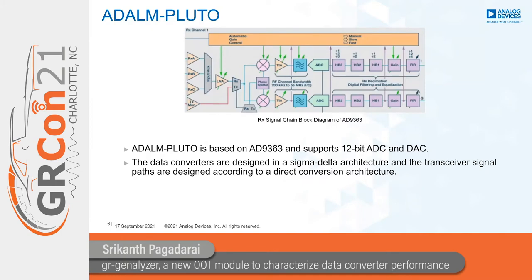The first example uses the Pluto SDR, also known as ADALM-Pluto, a well-known transceiver module made by Analog Devices. It contains the AD9363, an integrated transceiver with 12-bit resolution, an operating frequency range of 325 MHz to 3.8 GHz, and up to 20 MHz of instantaneous bandwidth. The data converters use a Sigma-Delta architecture and the transceiver signal paths follow a direct conversion framework. It has three configurable half-band filters with programmable decimation factors of 2 or 3, plus a programmable filter at the output.